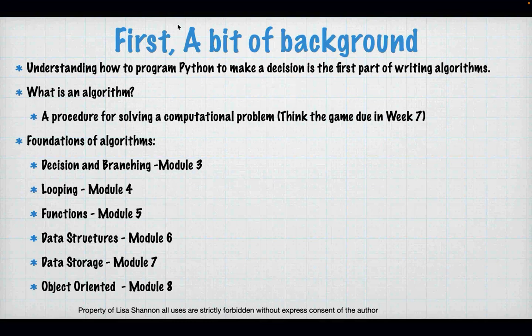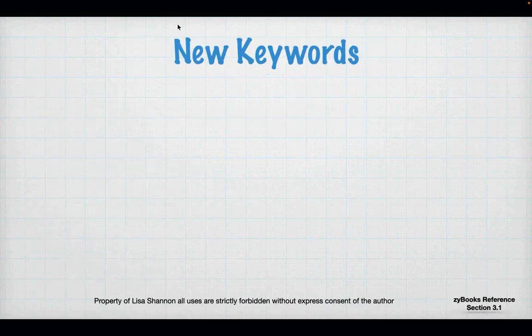Module four is looping, module five is functions, module six is data structures — all absolutely necessary for your game. Module seven covers file processing, which is just data storage, and module eight is object-oriented. Modules three through six are the basis for your game, so if you have questions, ask them. We also have some new keywords and new concepts this week.